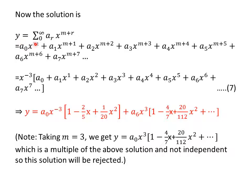Now, the solution is y equal to sigma a r x to the power m plus r. We have expanded this. Put m equal to minus three and take x power minus three common. We get equation seven as the solution. Putting the values of all the coefficients, we get y equal to a naught x power minus three times one minus two by five x plus one by twenty x square, and we have seen that a three, a four, a five all are zero.